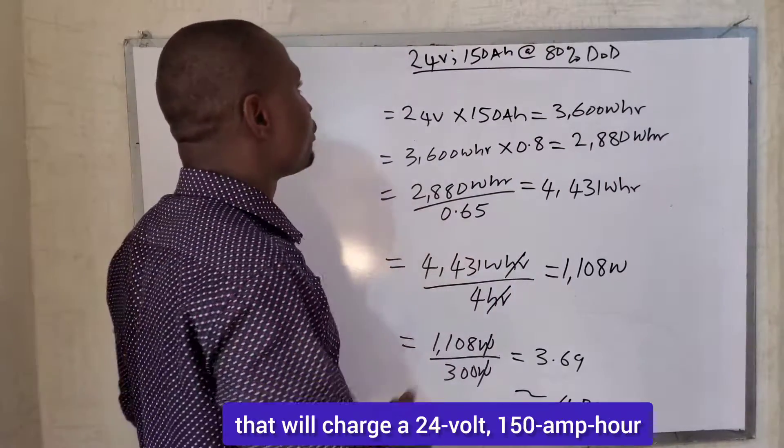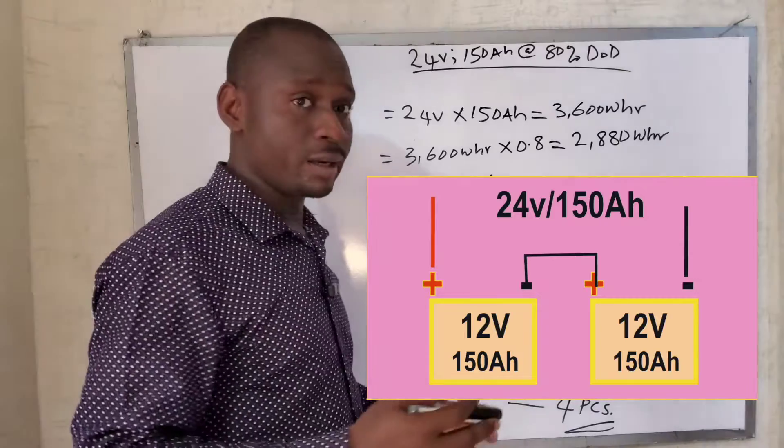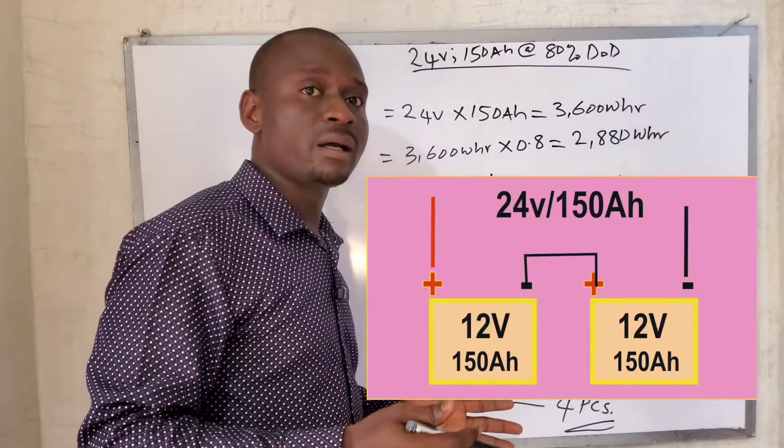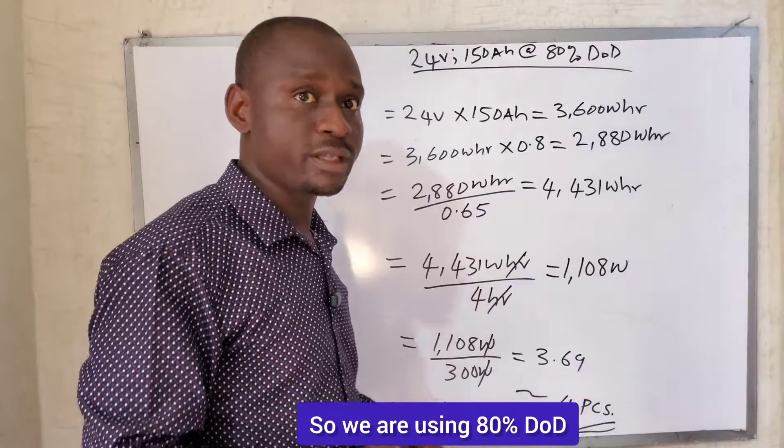To calculate the number of solar panels that will charge a 24-volt 150 amp-hour battery bank at 80% DoD - this is a tubular battery or a flooded battery, so we are using 80% depth of discharge.